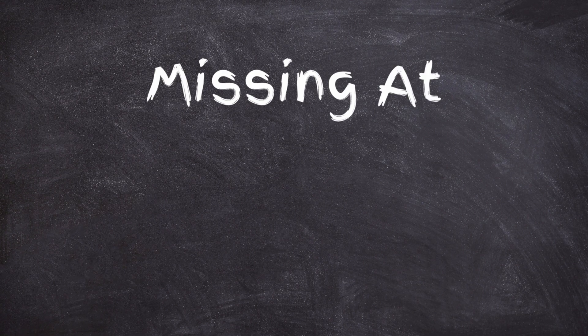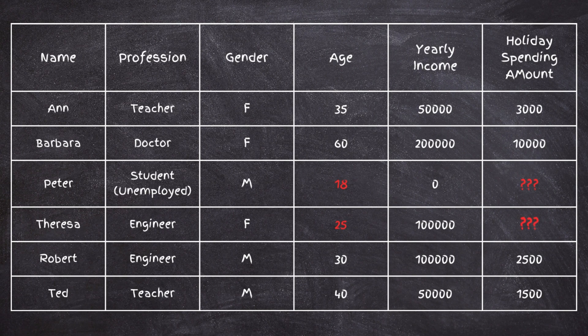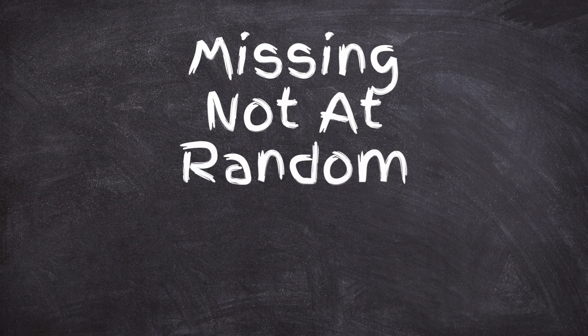The second type is Missing at Random, or MAR. This occurs when the reason a value is missing has to do with some characteristic of the group being studied, and the missingness can be explained by looking at other columns. For example, if holiday spending is only missing for people under 30, that age group characteristic explains the missingness — so we say this data is Missing at Random.